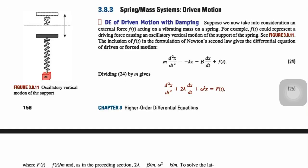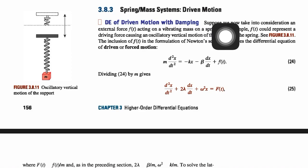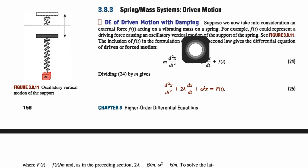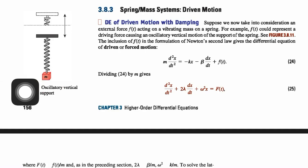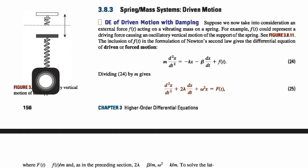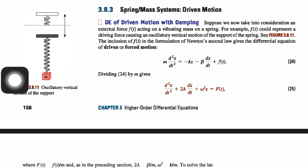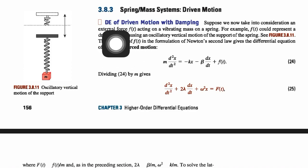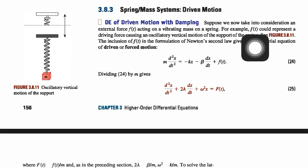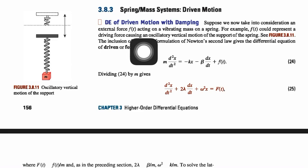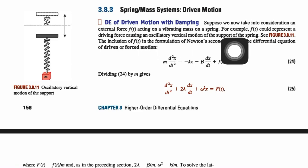The next topic is spring-mass system driven motion. We have to find a differential equation for driven motion with damping. Suppose we take into consideration an external force f(t) acting on a vibrating mass on a spring. Here is a mass m attached to a spring, and there is some external force f(t) acting on it. For example, f(t) could represent a driving force causing an oscillatory vertical motion of the support of a spring.